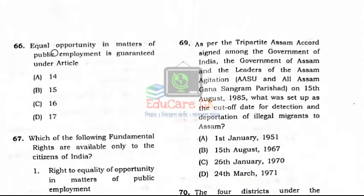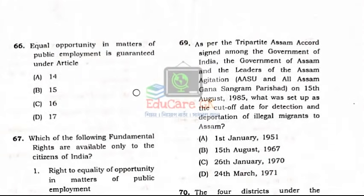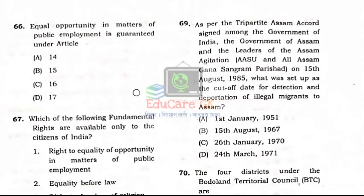Question Number 66: Equal opportunity in matters of public employment is guaranteed under which article? Option C: Article 16.